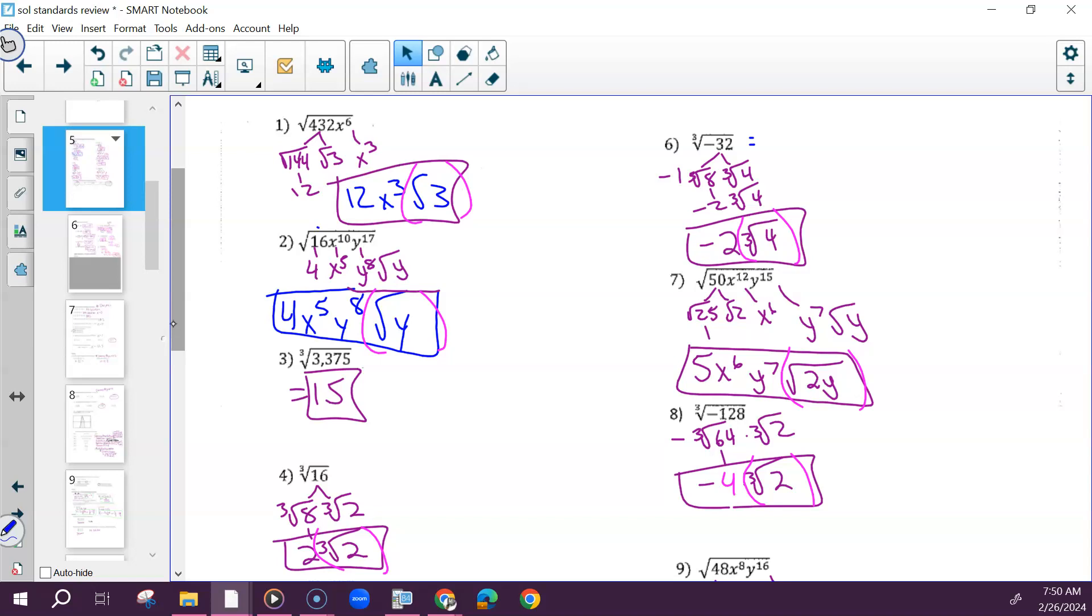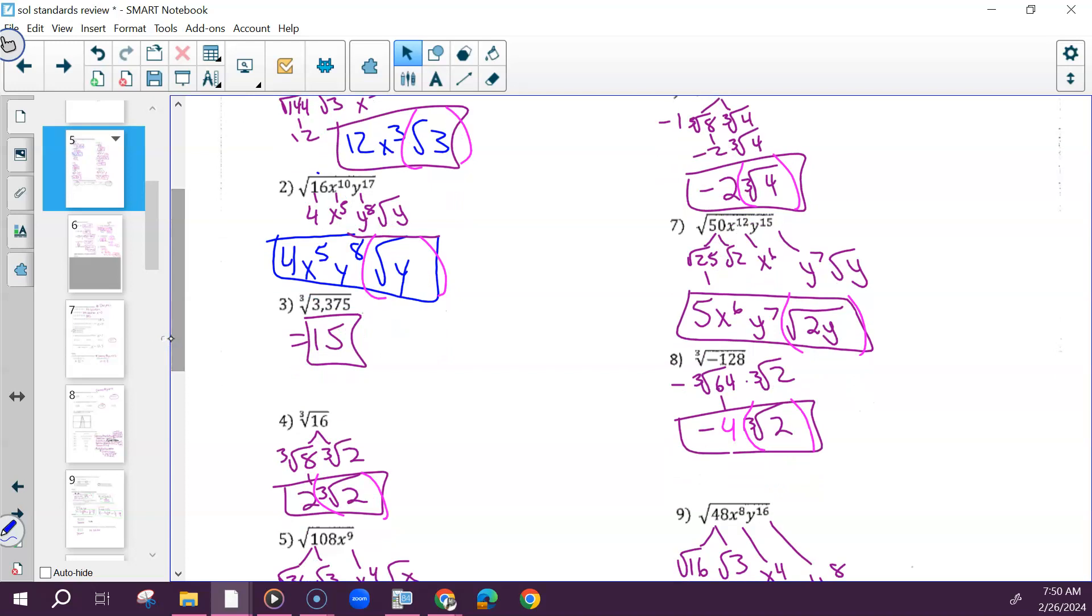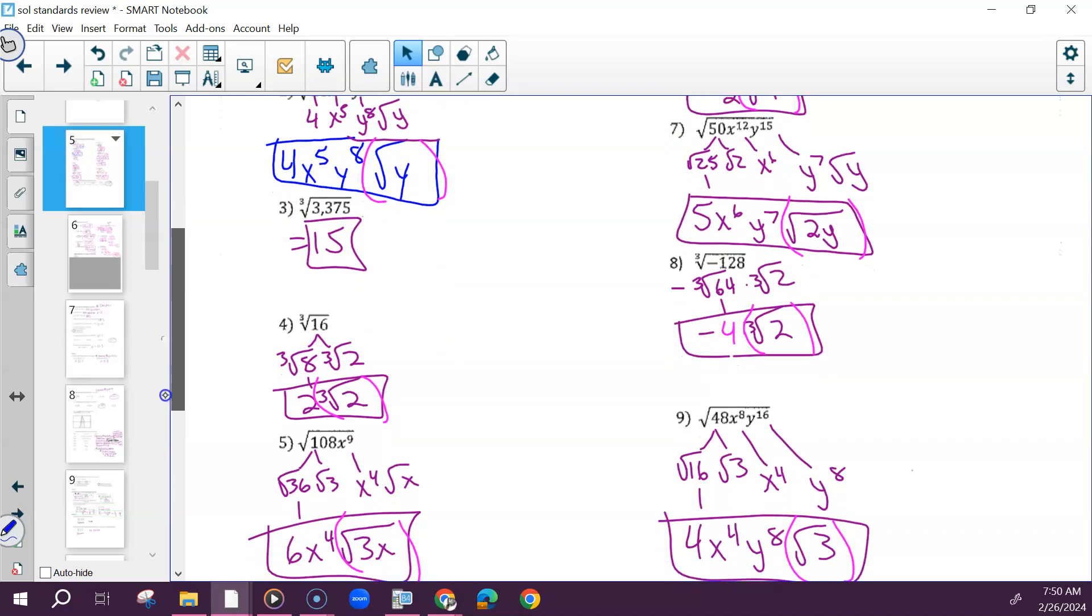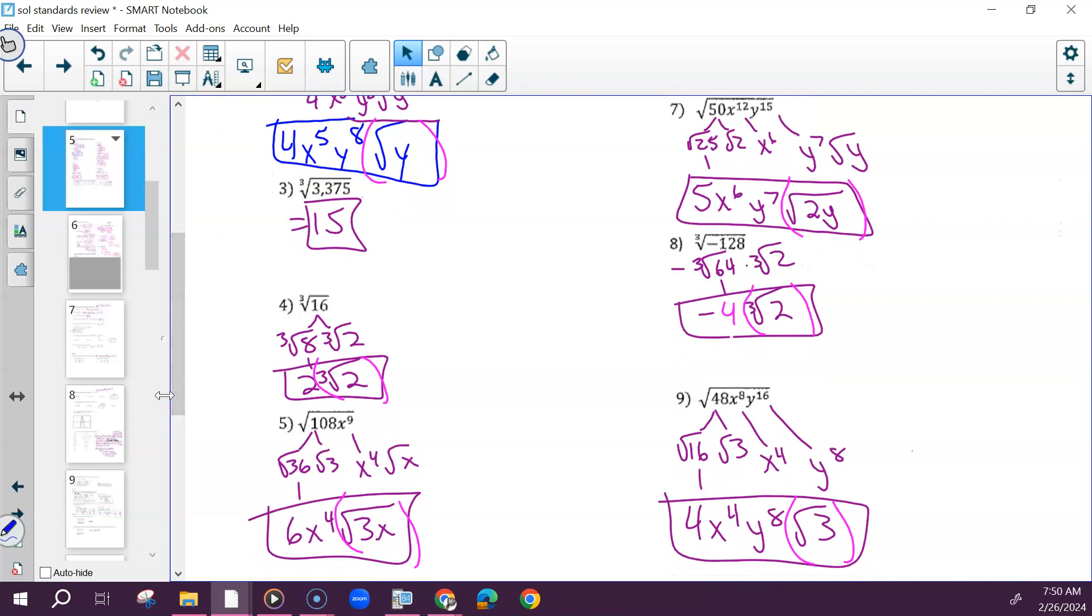Number two, 4x to the 5th, y to the 8th, times the square root of y. Sorry, not that one. What we did last class, the SOL A2A. Try and go back and do that. Number three is just 15. Number four, 2 times the cube root of 2, not 2 to the 3rd power, 2 times the cube root of 2.